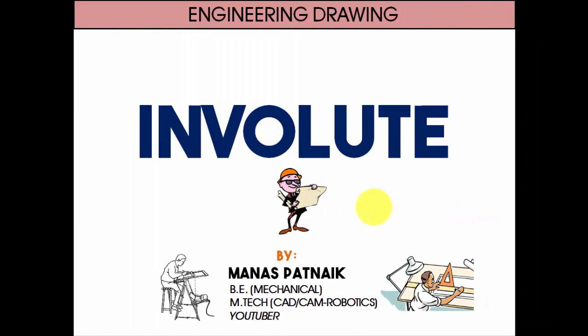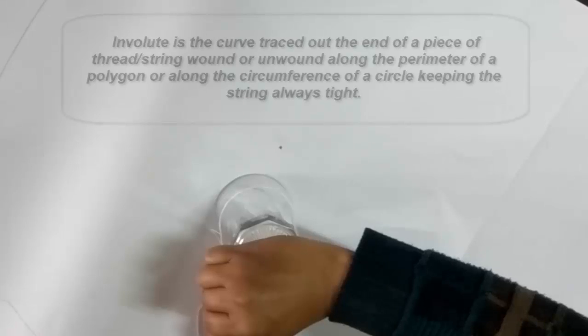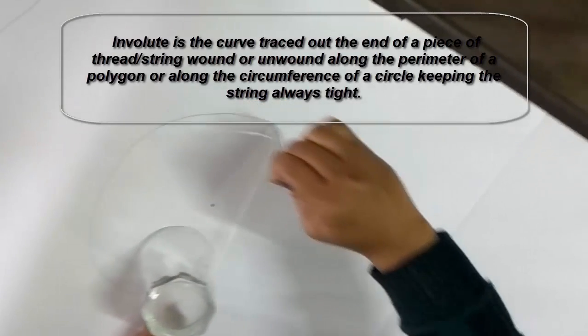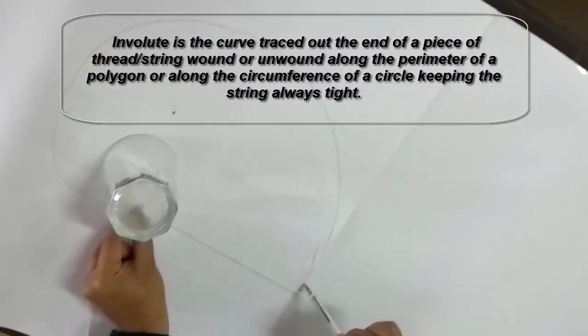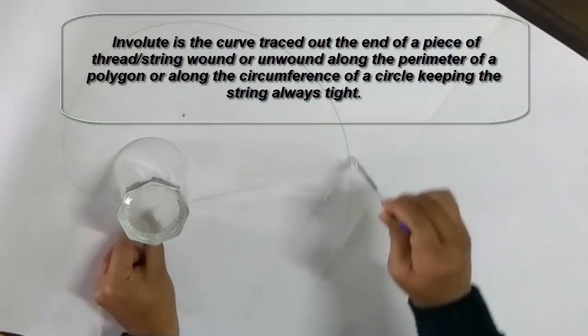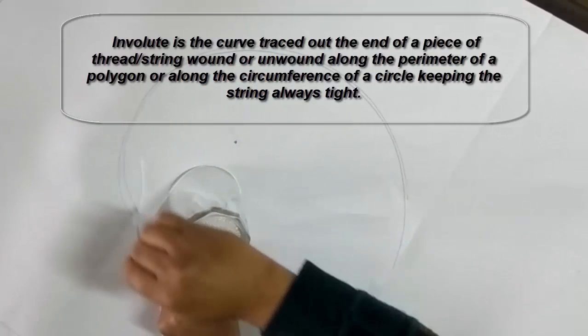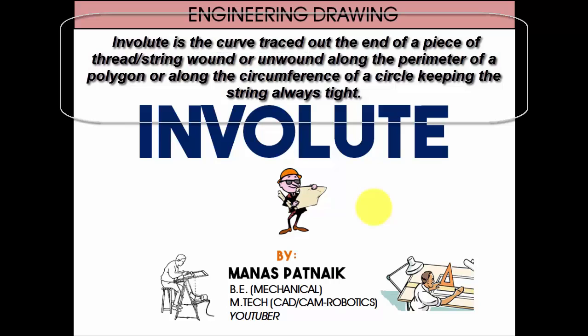Hey guys, how you doing? This is your friend and tutor Manas. Today we'll be discussing involutes. What exactly is an involute? It is the curve traced out by the end of a piece of thread wound or unwound along the perimeter of a polygon or along the circumference of a circle, keeping the string always tight.